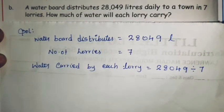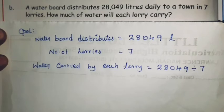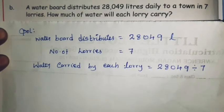So exercise 2.8, question number two. What is given? A water board distributes 28,049 liters daily to a town in 7 lorries. How much water will each lorry carry?